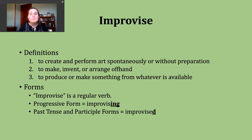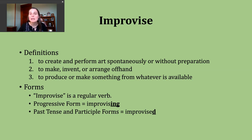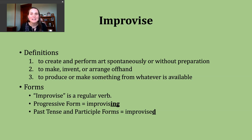You should know the verb improvise is a regular verb. To make the progressive form, I drop the E before adding I-N-G to form improvising. The past tense and participle forms can be made by just adding the letter D, since this verb already ends in an E. Our base verb improvise ends in a voiced Z sound, so the ED ending just makes a D sound without adding an extra syllable. It should sound like this: improvised. Improvised.